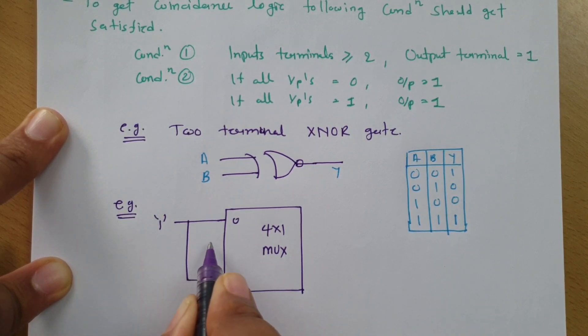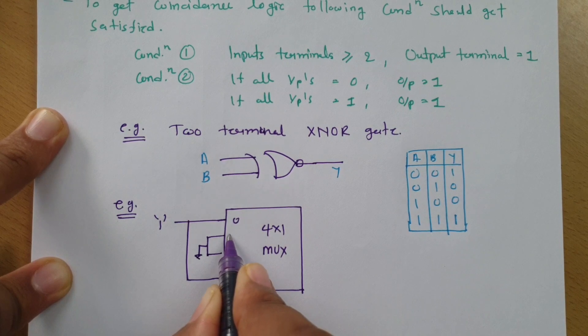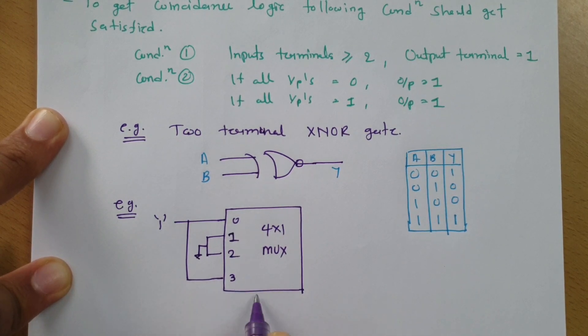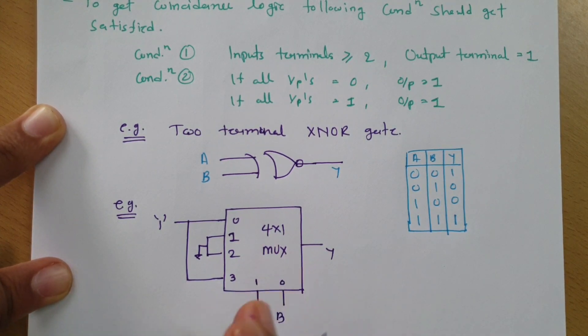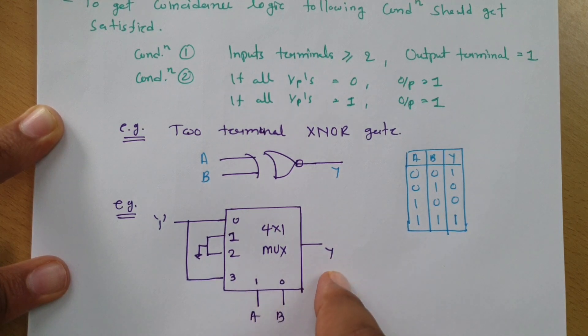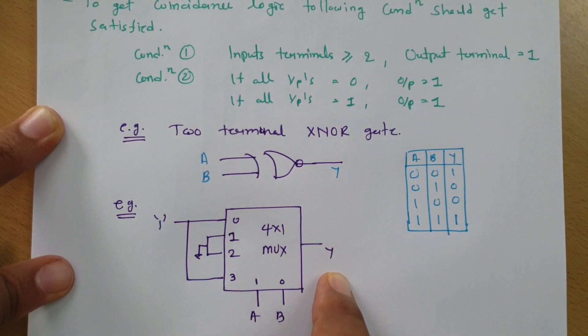In this MUX circuit, we have logic one here, and this is grounded here. The selection line is AB, and the function output is Y. The question is: do you think this is coincidence logic at the output side?